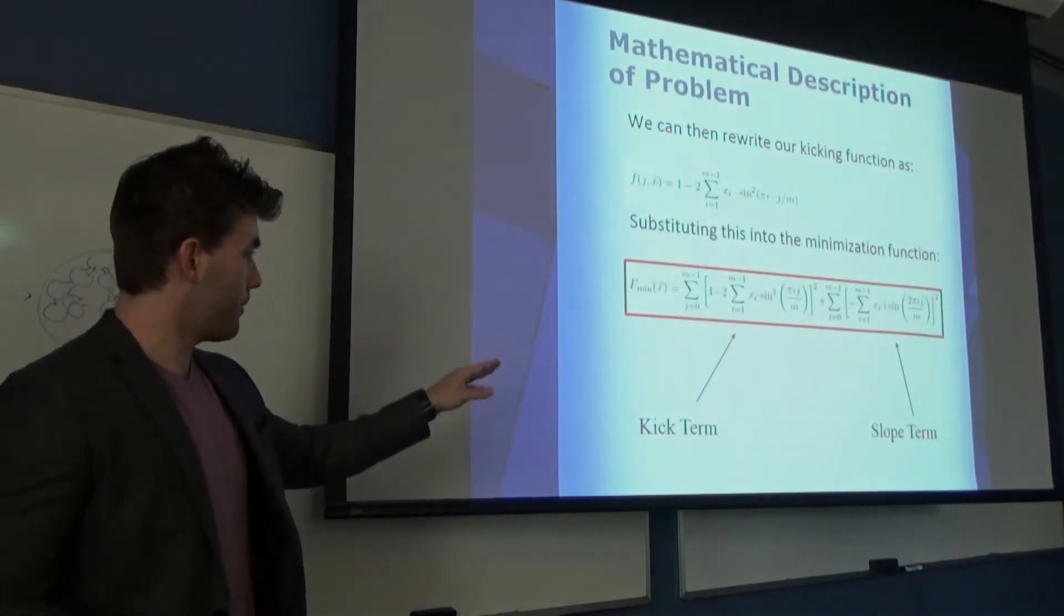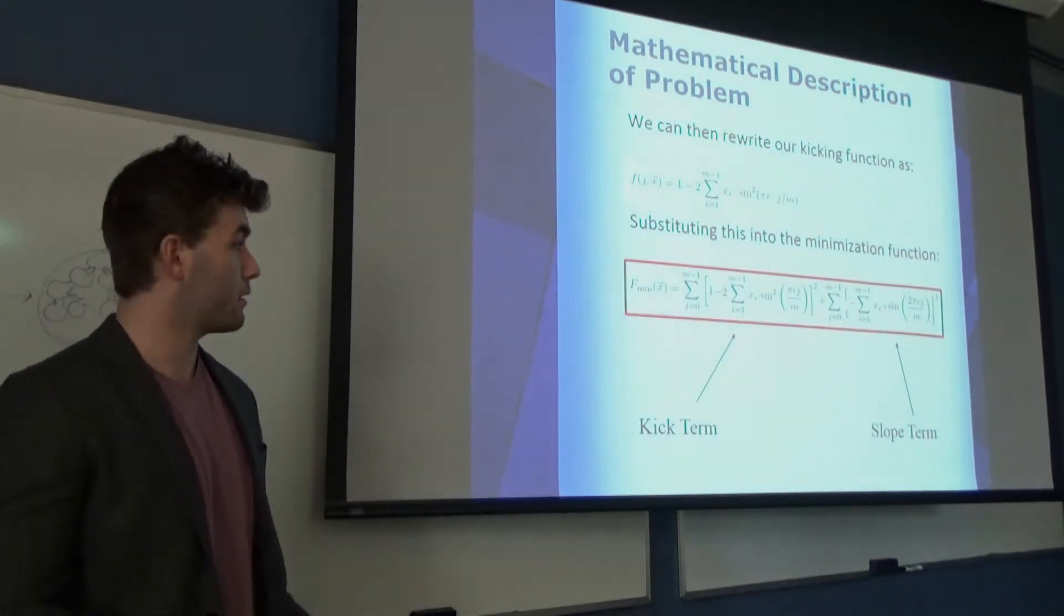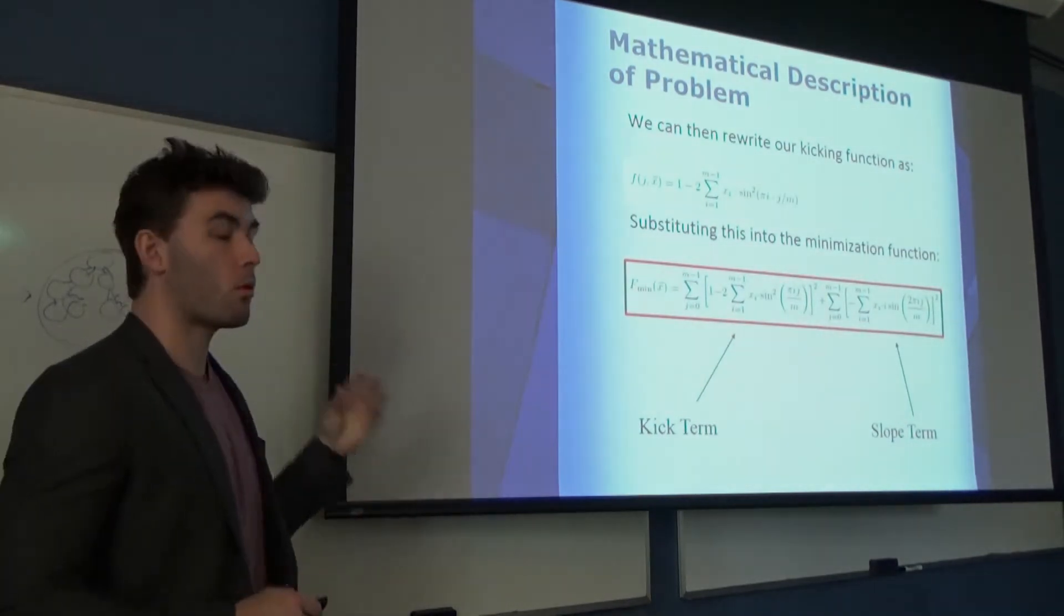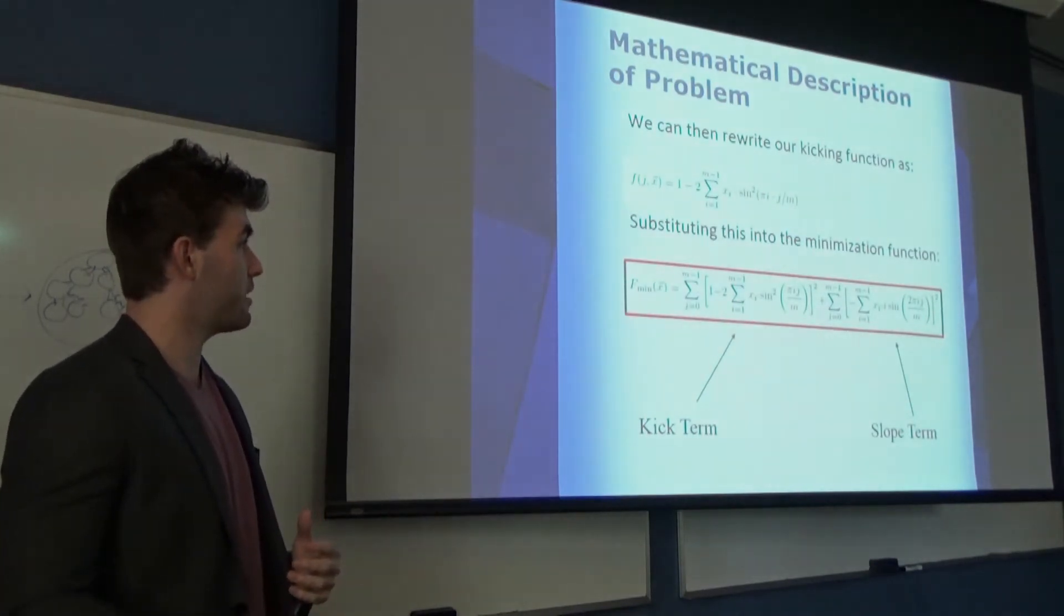What's interesting about this is we're summing over i, we're summing over j. That means that this whole function only depends on the x sub i's. That's the quantity that I'm going to be optimizing such that the entire thing is minimized.